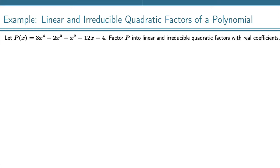Let P(x) equal 3x to the 4th minus 2x cubed minus x squared minus 12x minus 4. Factor P into linear and irreducible quadratic factors with real coefficients.